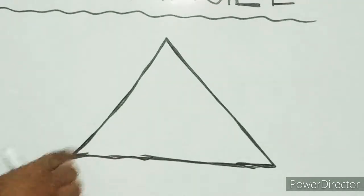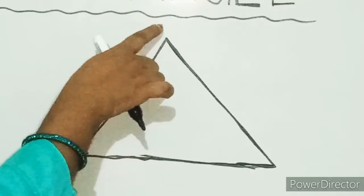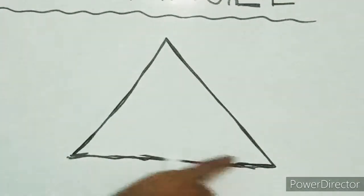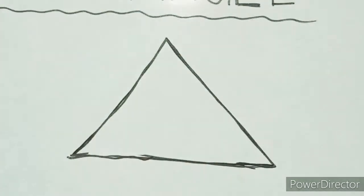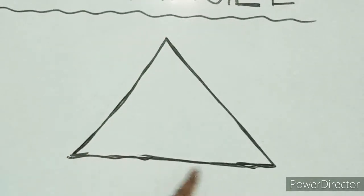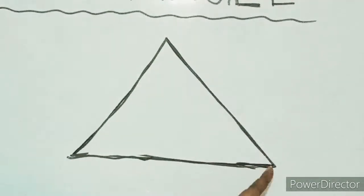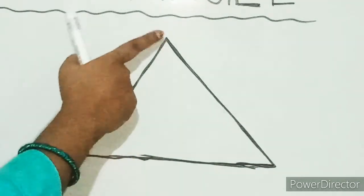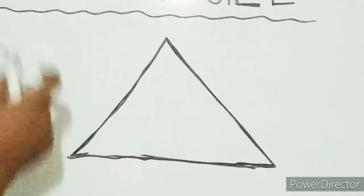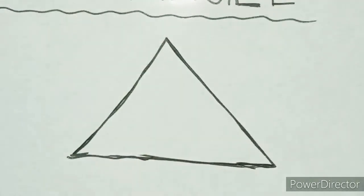Up the mountain, down and back. Up the mountain, down and back. That makes a triangle. Can you see the sides? One, two, three. And can you see the corners? One, two, three.